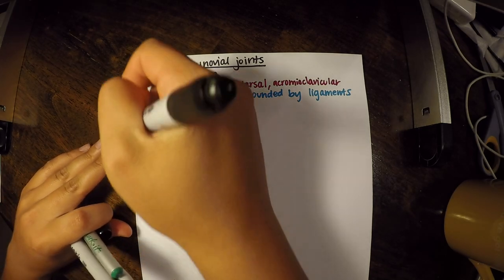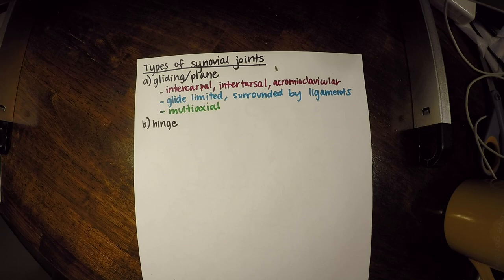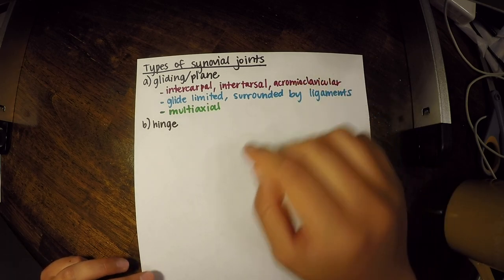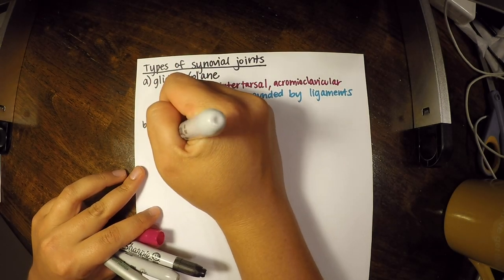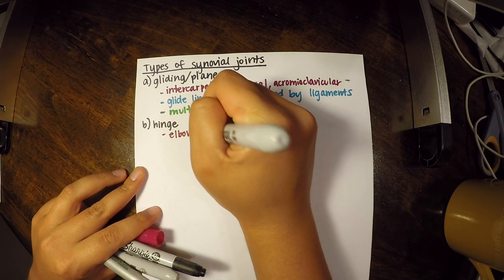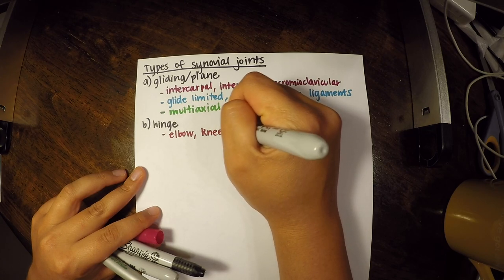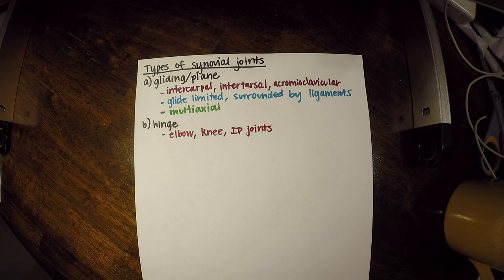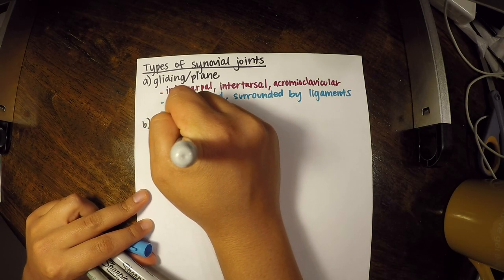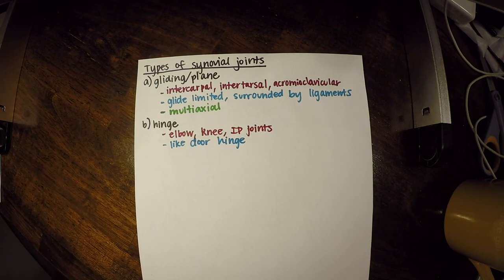The next type is the hinge joint, which is actually the most common joint in the body. Examples include the elbow, the knee, and the interphalangeal joints, also known as IP joints. They work like a door hinge and are uniaxial — they only move in one axis.